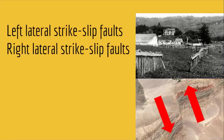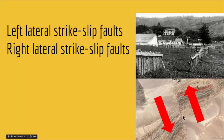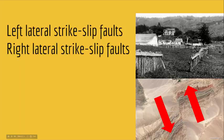We have two types of strike-slip faults: left-lateral and right-lateral. In a left-lateral strike-slip fault, if you stand on the fault, the opposite side moves to the left. In a right-lateral strike-slip fault, if you stand on one side, the other side has moved to the right.